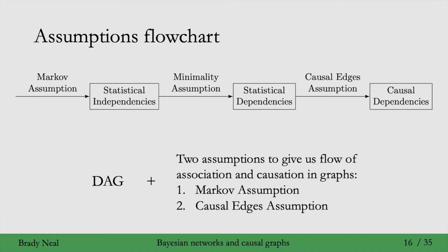For causal dependence, we need a DAG plus two assumptions: the Markov assumption and the causal edges assumption. The reason I don't include minimality here is because the first part of minimality is the Markov assumption, and the second part of minimality is subsumed by the causal edges assumption. That's because if a parent is a direct cause of its child, causal dependence is flowing between those two, so statistical dependence must also be.